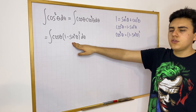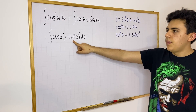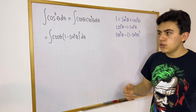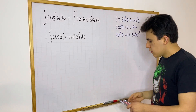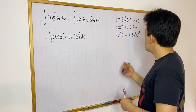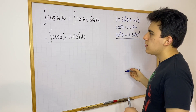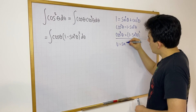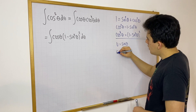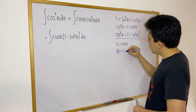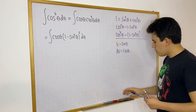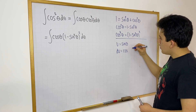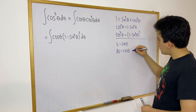Hopefully you see something going on here. Over here we have sine, and over here we have the derivative of sine. That should tell you that we can use u-substitution. I'm going to let u be equal to sine theta, which means that du will be equal to cosine theta d theta.